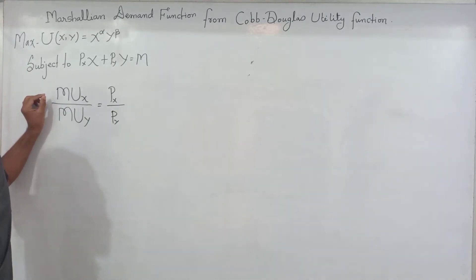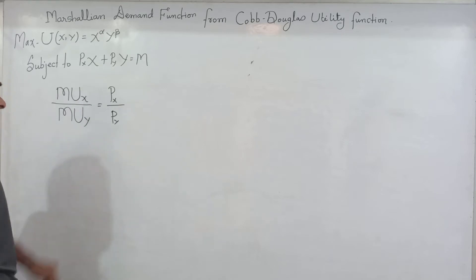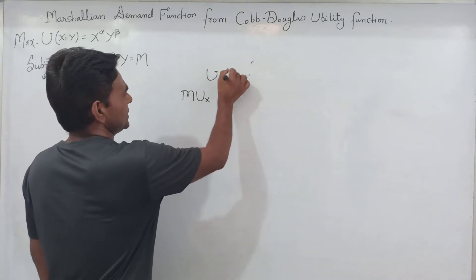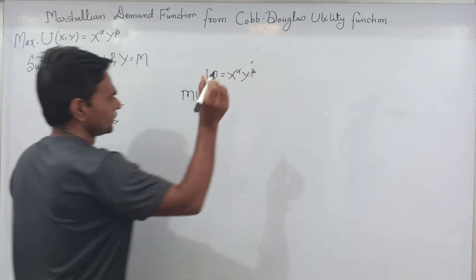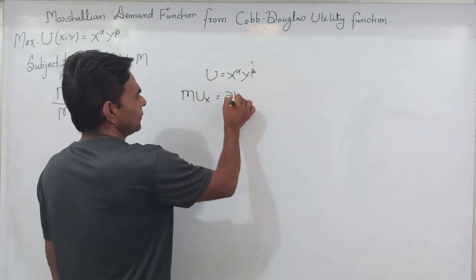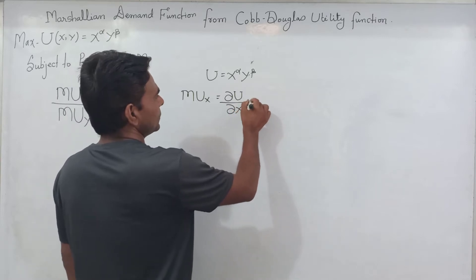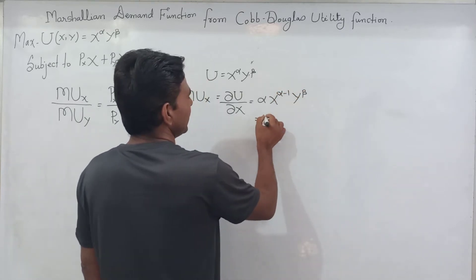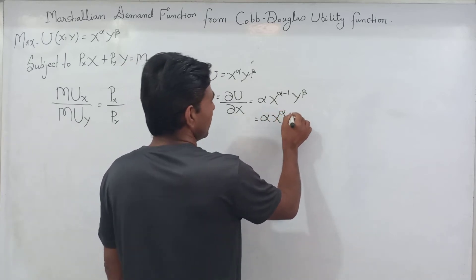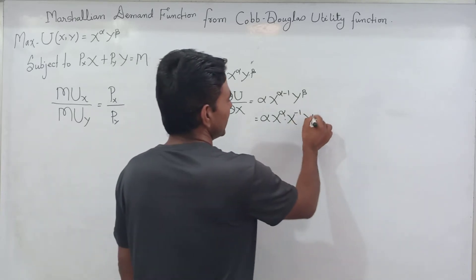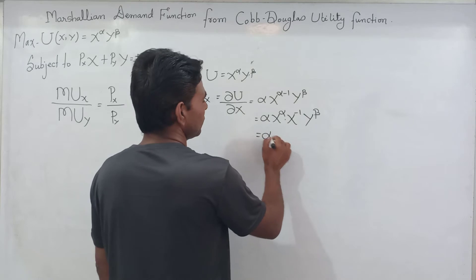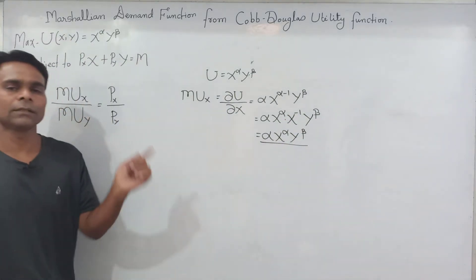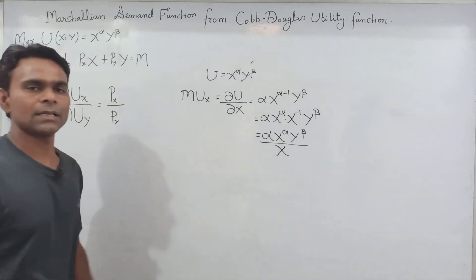That is: MUx divided by MUy equals Px divided by Py. Now the next task is to calculate the marginal utility of x. The utility function is x to the power alpha times y to the power beta. Taking the partial derivative of U with respect to x gives alpha times x to the power (alpha minus 1) times y to the power beta, which can be rewritten as alpha times x to the power alpha times y to the power beta divided by x, by applying the law of indices.